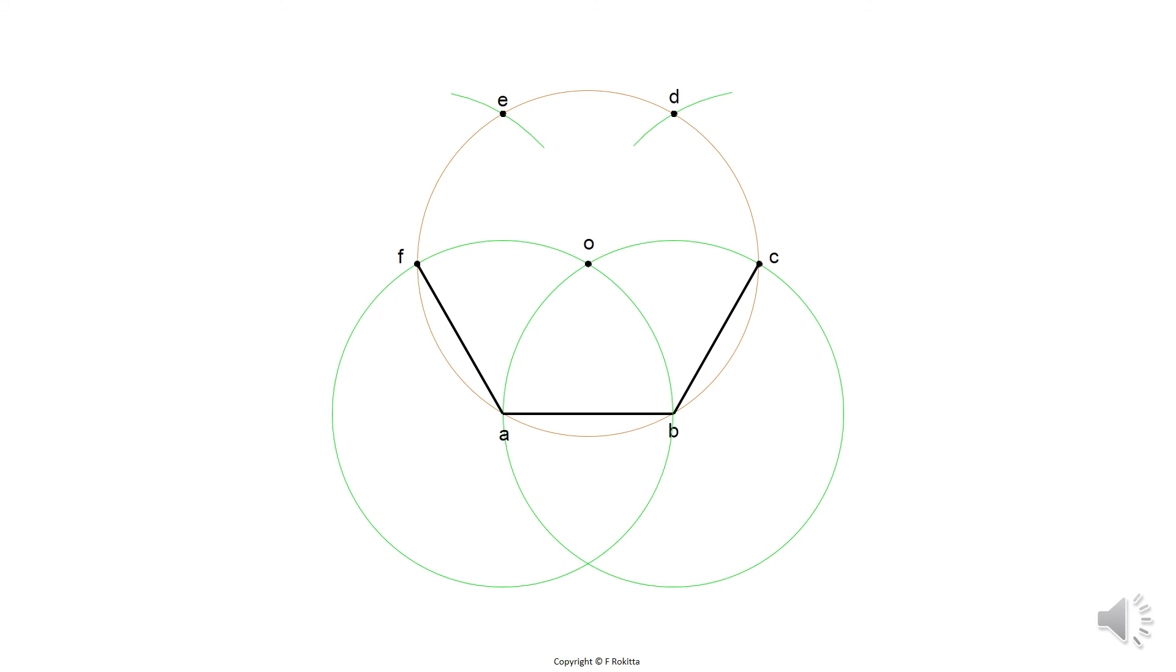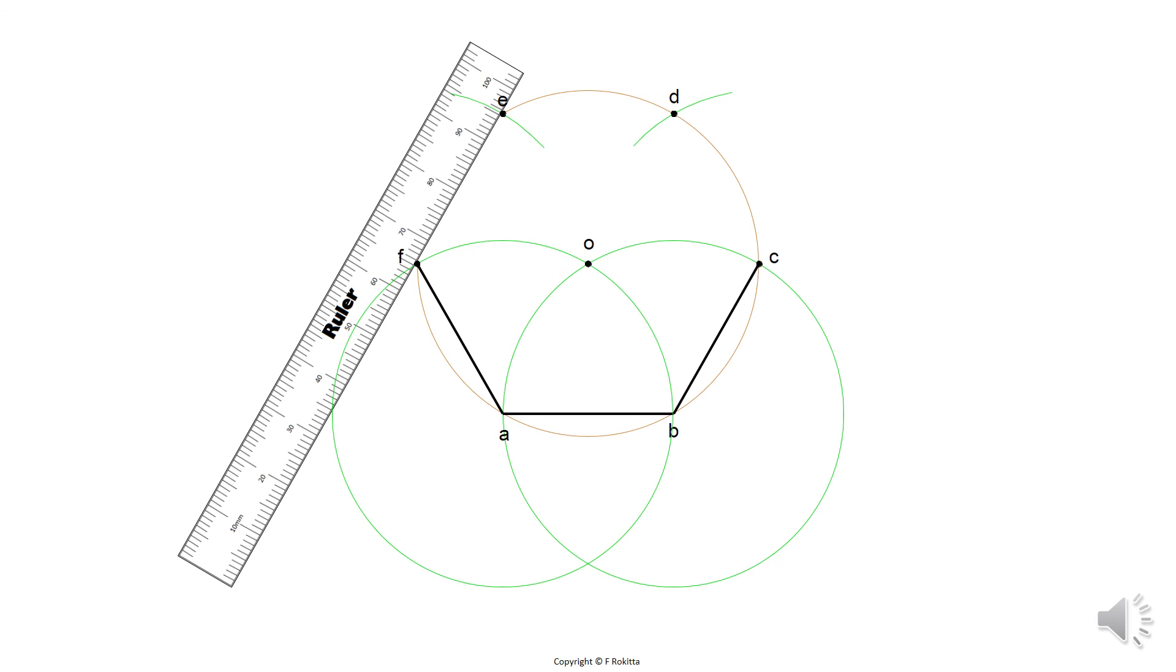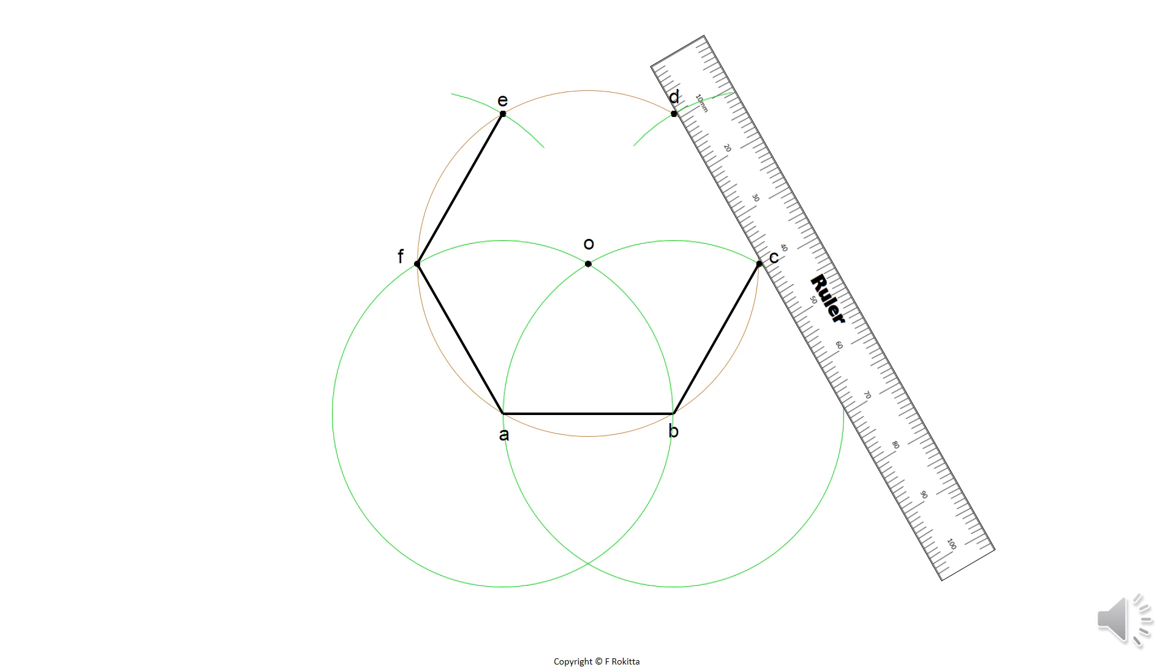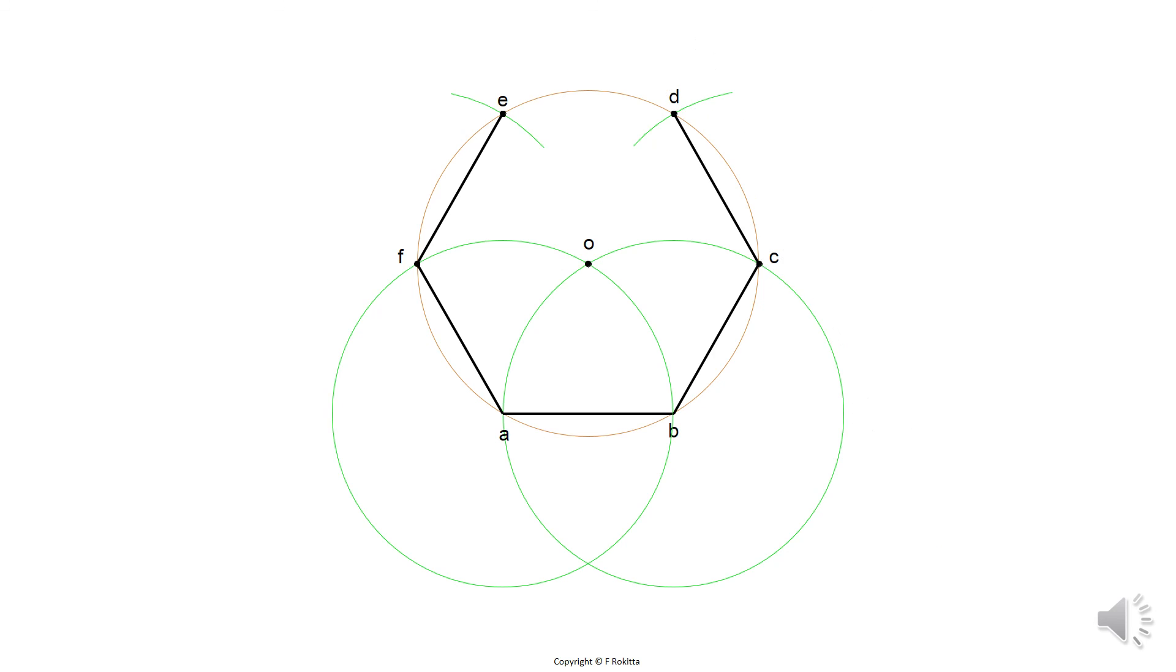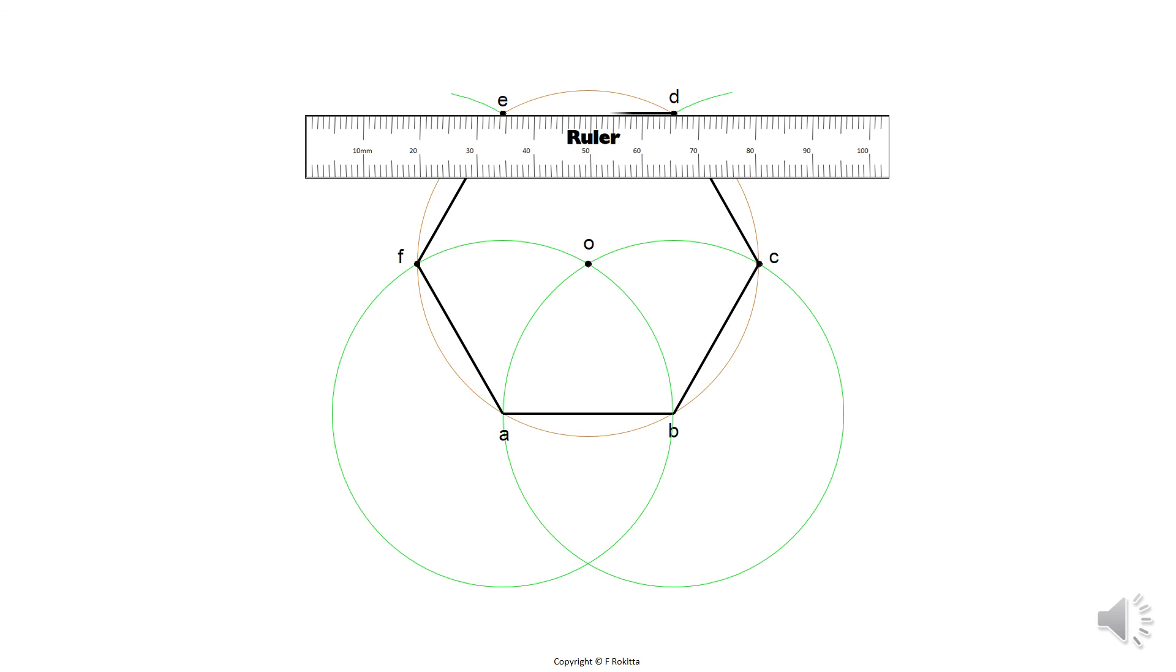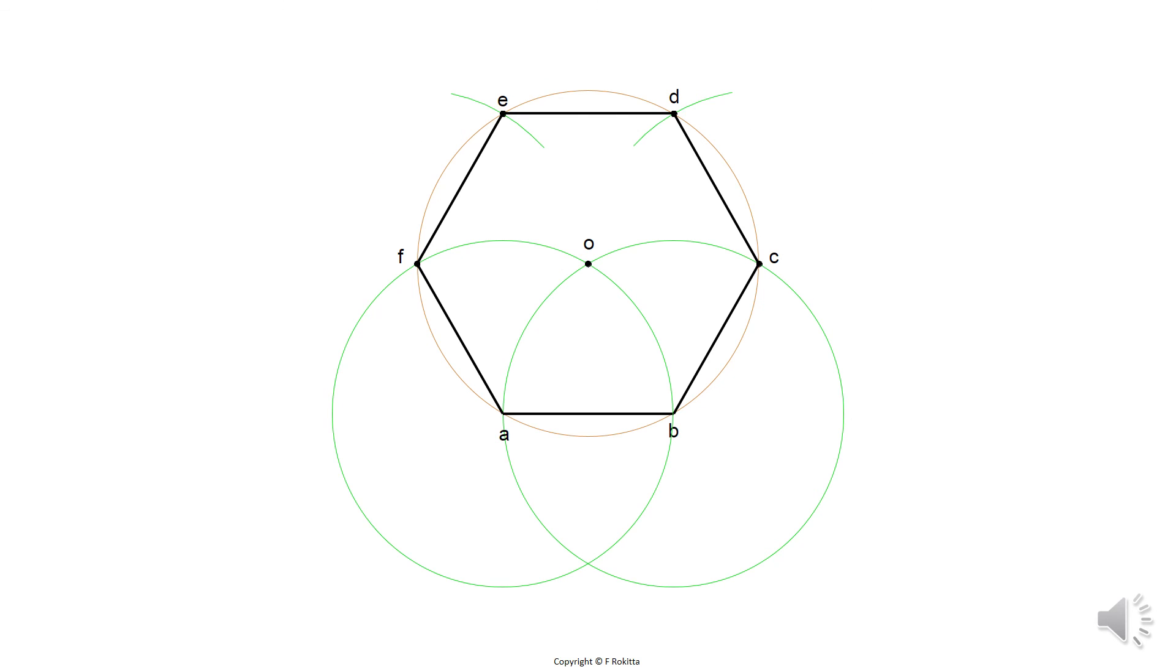Continue to connect the outer corners of your hexagon by placing your ruler at F and aligning it with E and draw the solid line. Do the same from C to D and lastly from D to E. This will complete the outer edge of your hexagon.